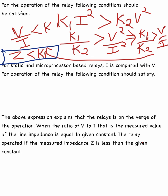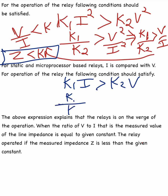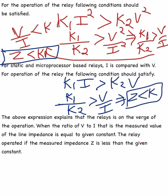For static and microprocessor-based relays, current I is compared with voltage V, and the operating condition is k1·I > k2·V, giving Z < k. The relay is on the verge of operation when the ratio V/I — the measured line impedance — equals the given constant k. The relay operates if the measured impedance Z is less than the given constant k.